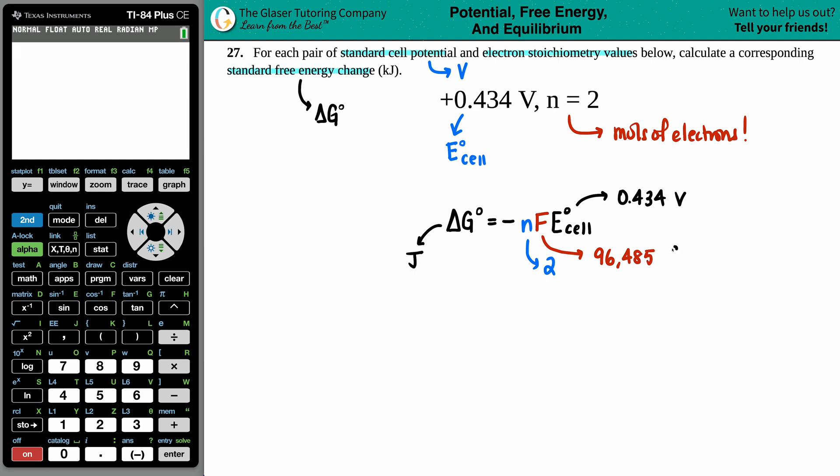But the F value, which is called Faraday's constant, it's a constant number. The number is 96,485. The units for Faraday's constant is coulomb per mole.